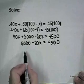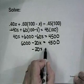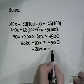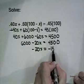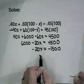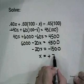Then we subtract 6,000 from both sides, and divide both sides by negative 20. That will give us a positive answer of 75. You should be able to check your work analytically. We're going to go ahead and go to our graphing calculator and check our solution using the intersection of graphs method.